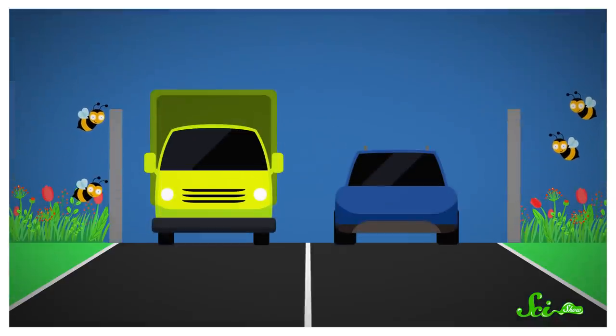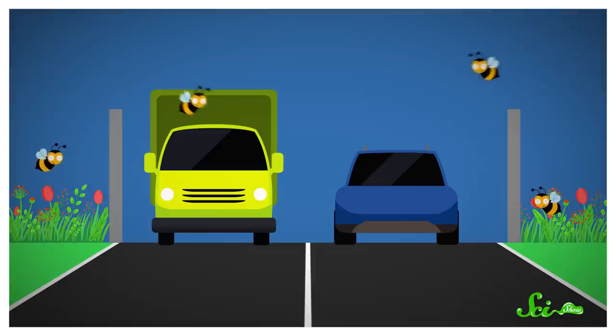One 2013 study tried using tall screens to prevent ground-nesting bees from crossing a road at car height. But the bees just flew over them, then went back down into the danger zone.